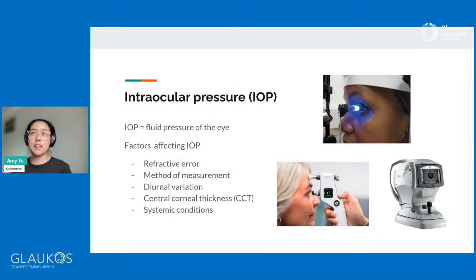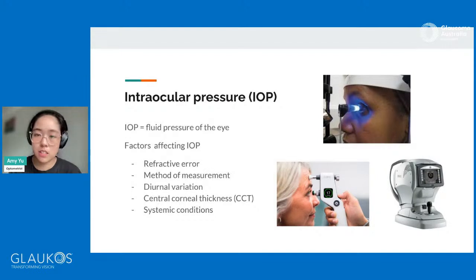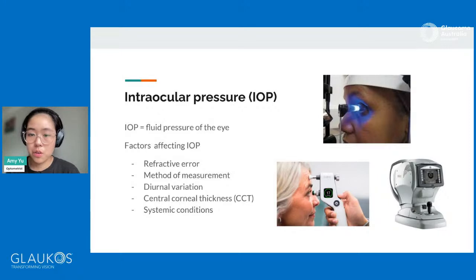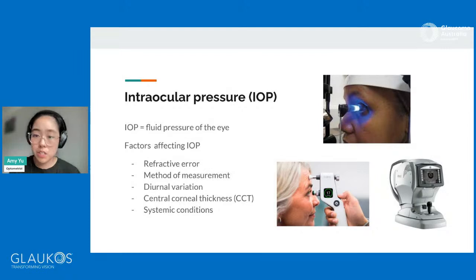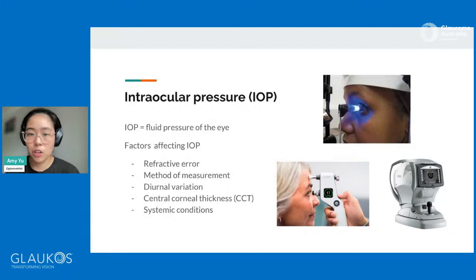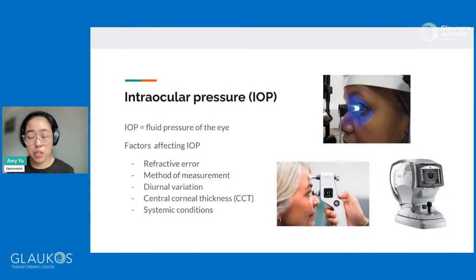Another thing that can affect eye pressure is diurnal variation — what that means is the time of day that the eye pressure is measured. According to several practices and studies, eye pressures are generally a little bit higher in the morning and they tend to go down a little bit later. The reason why we need to measure eye pressures regularly is because we need to set a baseline of pre-treatment values before we can actually set targets.